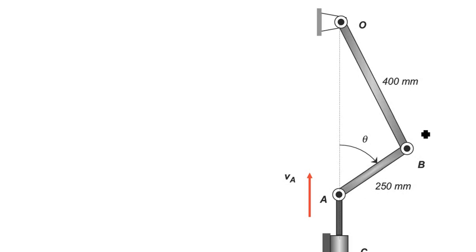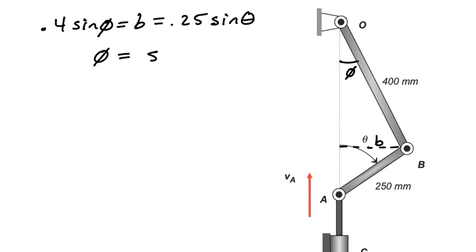So in this case, what I'm going to ask you to realize is that when the angle theta is equal to 45 degrees, we can have some other angle here, phi, which we can determine based on the fact that they share a common line here. You can think of this as two triangles, and we could find this distance, which I'm going to choose to call little b, by noting that 0.4 times the sine of the angle phi is going to equal b, but b will also equal 0.25 times the sine of the angle theta.